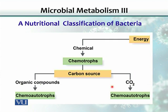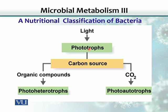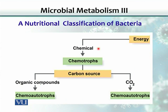Now, the nutritional classification of bacteria. Bacteria need energy. If the energy source is a chemical, they are called chemotrophs. If the energy source is light, they are called phototrophs. Bacteria also use carbon. If the carbon source is carbon dioxide, chemotrophs would be classified as chemoautotrophs — energy derived from a chemical (mostly inorganic) and carbon sourced from atmospheric carbon dioxide.